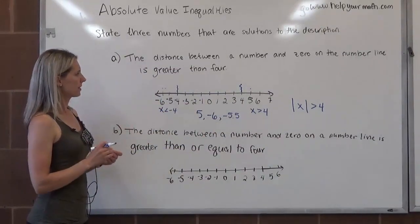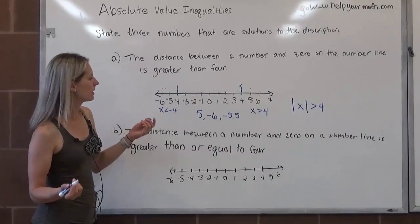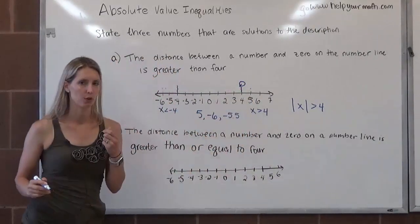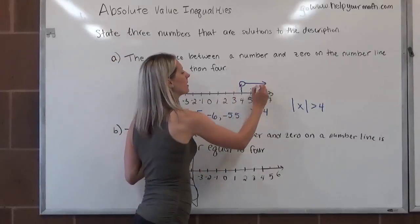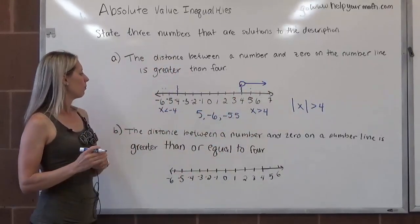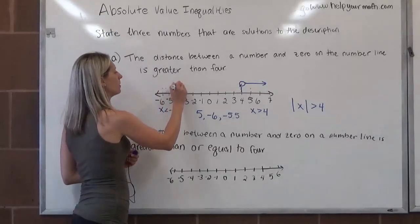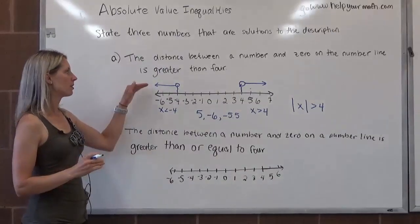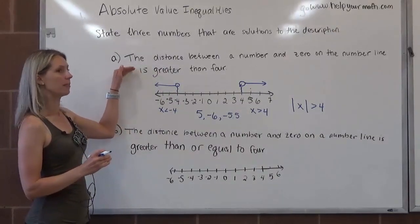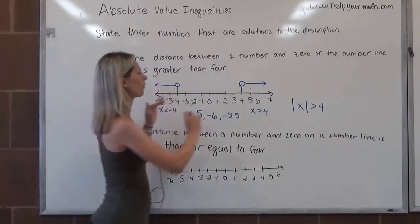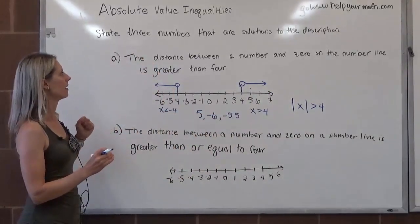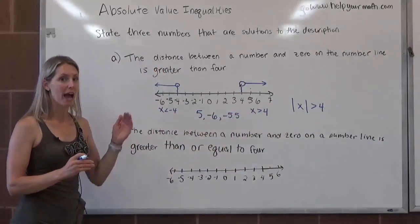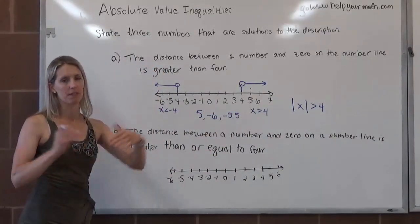To finish this graph: all numbers bigger than 4 would be represented by an open circle over 4 with an arrow going to the right. Where are the numbers less than negative 4? That would be an open circle over negative 4 with an arrow going to the left. This is how we graphically represent numbers further than 4 from 0, and we write it as the absolute value of x is greater than 4.